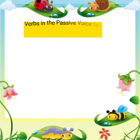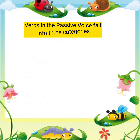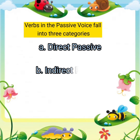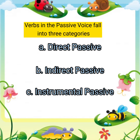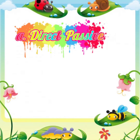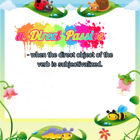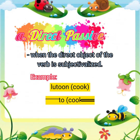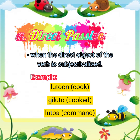Verbs in the passive voice fall into three categories: direct passive, indirect passive, and instrumental passive. In direct passive, the direct object of the verb is subjectivized. For example: lutoon (cook), giluto (cooked), lutoa (command form).